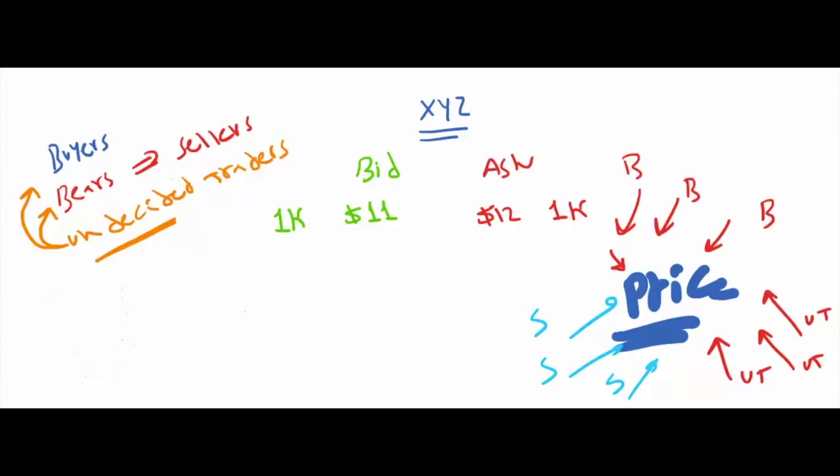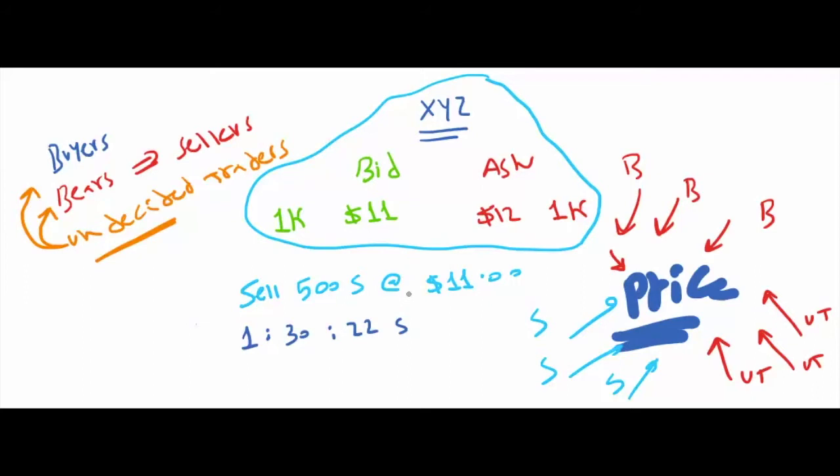Let's imagine that here we have this quote. Let's imagine that the seller here has accepted the buyer's bid at 11 and decided to sell 500 shares at 11. The time of this trade was at 1 PM, 30 minutes, and 22 seconds.